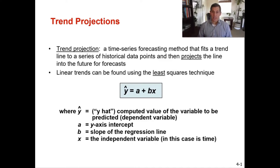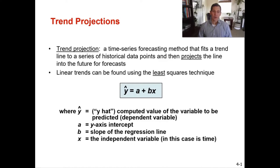Least squares can be done in Microsoft Excel, which I'll show you towards the end of this lecture recording, but right now we're going to walk through how to do it manually to calculate what we believe a future forecast will be in future periods. A trend projection is a time series forecasting method that fits a trend line to a series of historical data points and then projects that line into future forecasts. Linear trends can be found using the least squares technique.